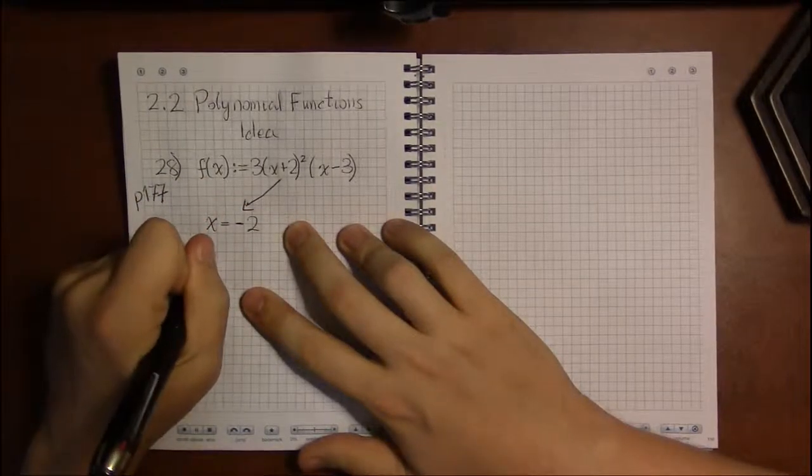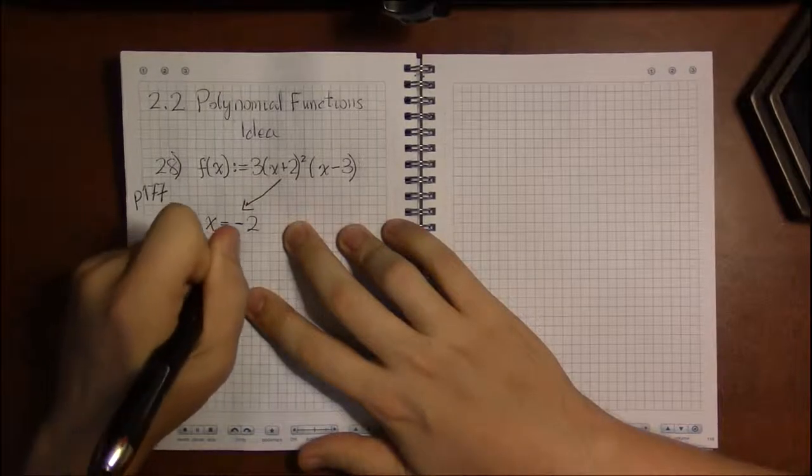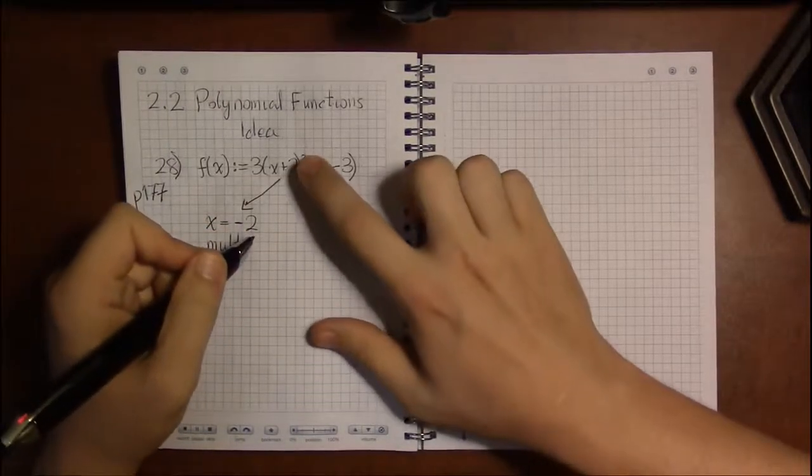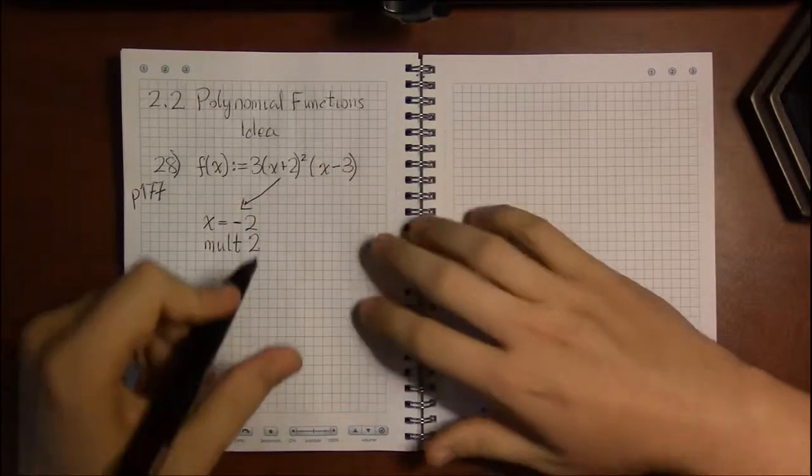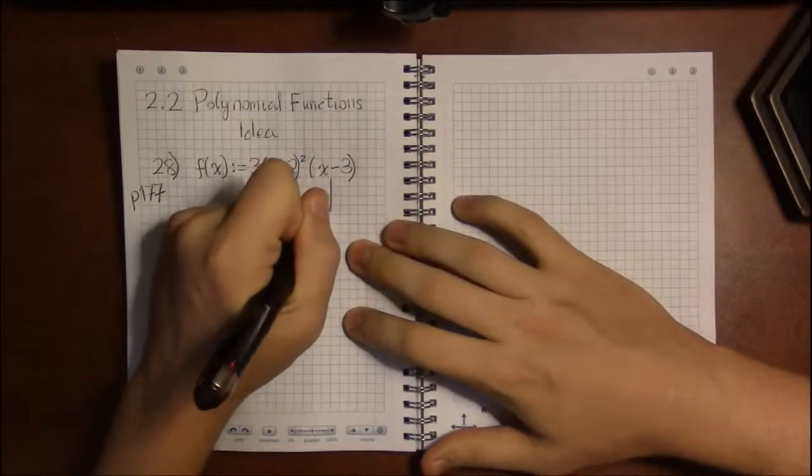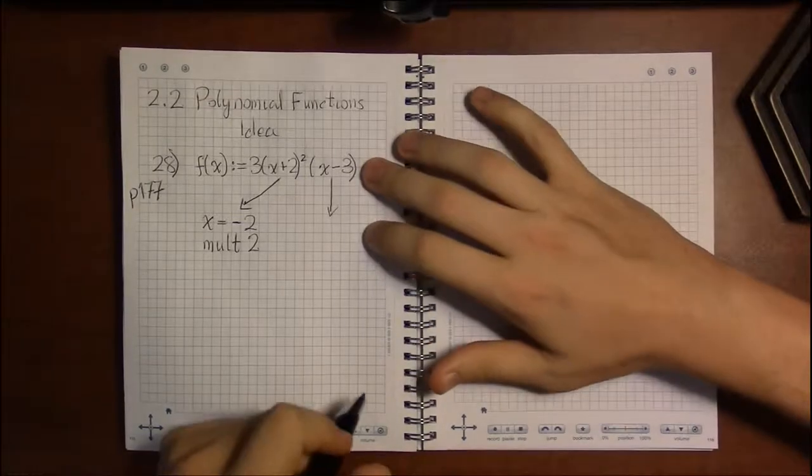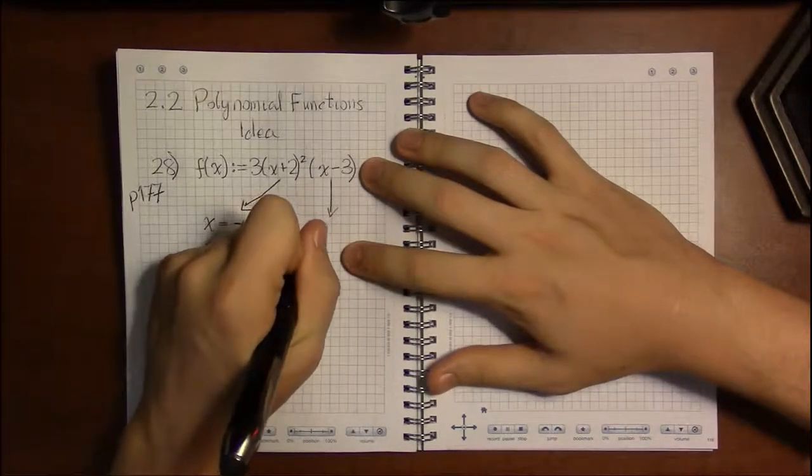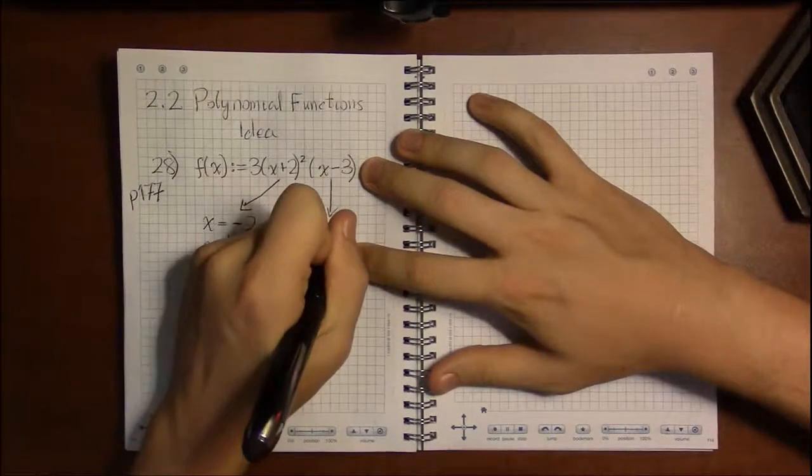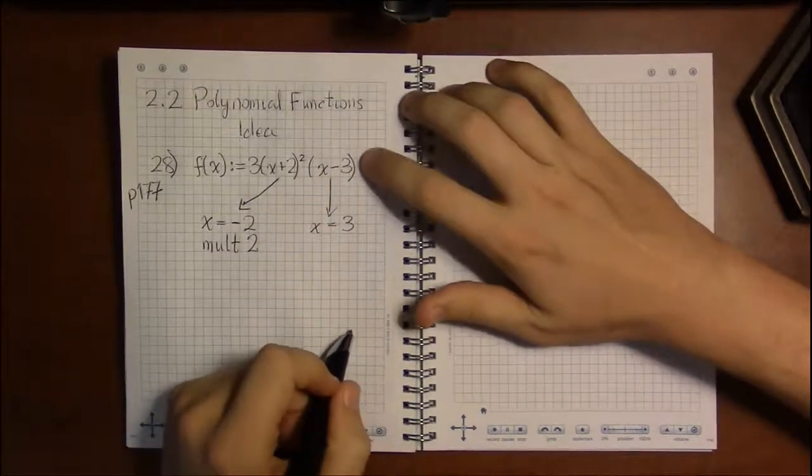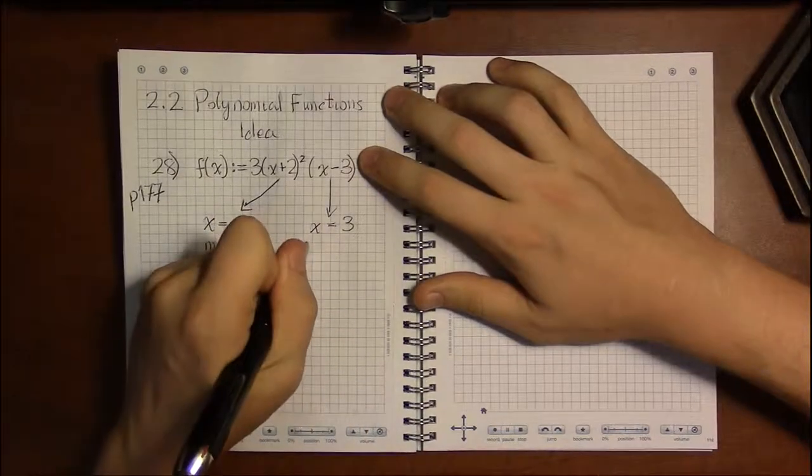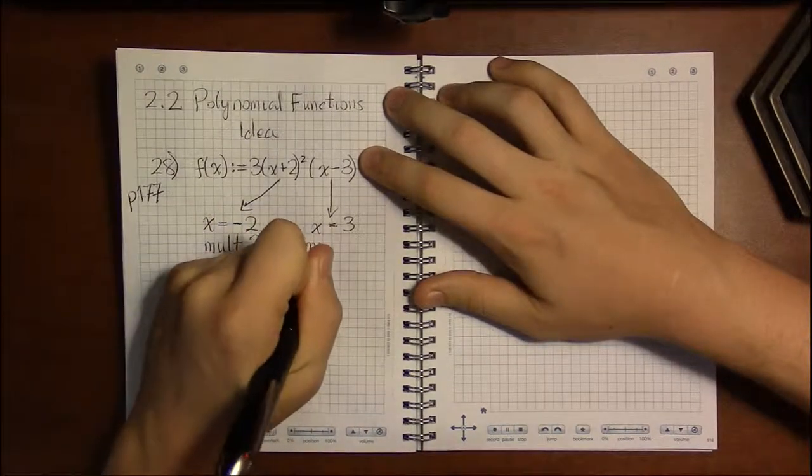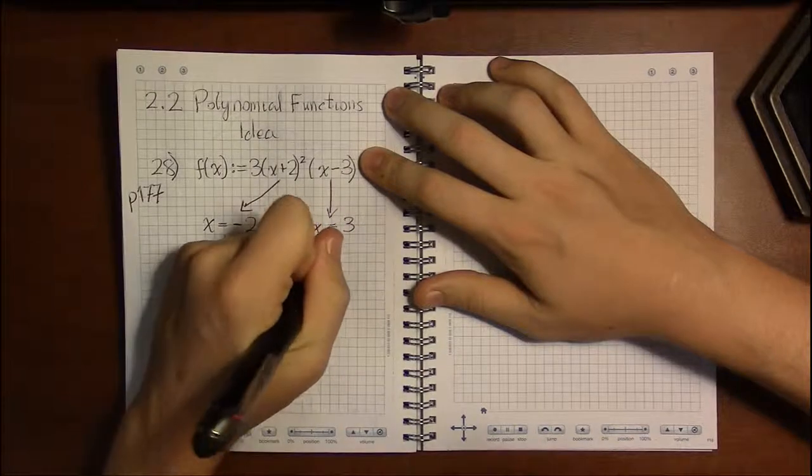This x-intercept had a multiplicity—its exponent, in other words—of 2. And then the other factor, x minus 3, when we set that equal to 0 and solved, we got x equals 3, and the exponent on x minus 3, since there's not one written, it's just 1, because anything to the first power is itself.